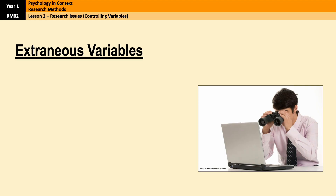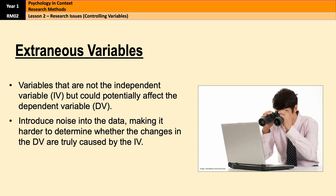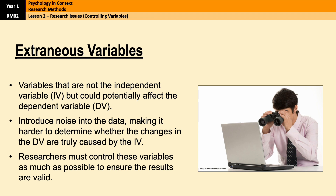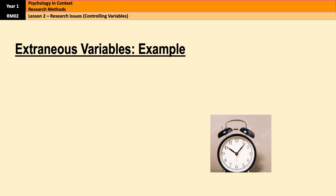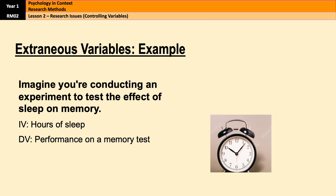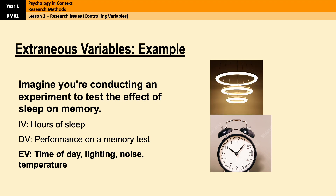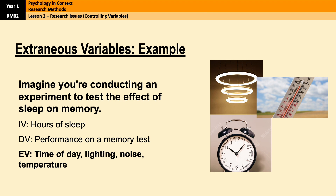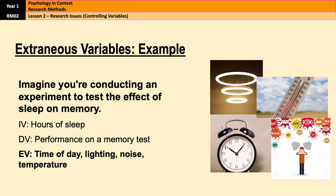First up are extraneous variables. These are any variables other than the IV that could potentially affect the dependent variable. If they're not controlled, they can introduce noise into the data, which makes it harder to determine whether the changes in the DV are truly caused by the IV. For example, imagine you're conducting an experiment to test the effect of sleep on memory. The independent variable is the amount of sleep a participant gets, and the dependent variable is their performance on a memory test. Factors like lighting in the room, the time of day, ambient noise, or even the participant's motivation on the day could affect memory performance — and they're all examples of extraneous variables.